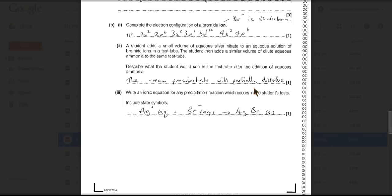So you've got to ask yourself, what will the silver nitrate do? Well that will produce a cream precipitate. What will the aqueous ammonia do, the dilute aqueous ammonia? Well that will partially dissolve the silver bromide precipitate, that cream silver bromide precipitate.